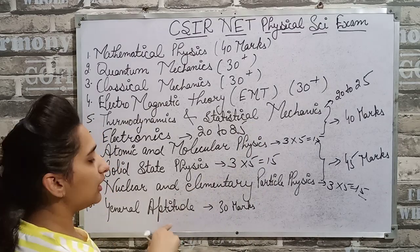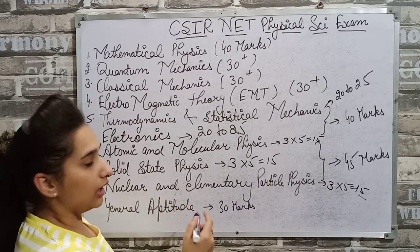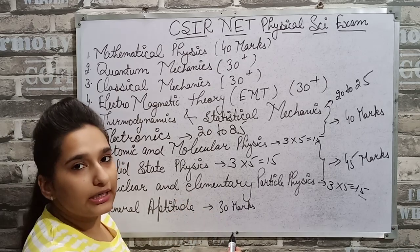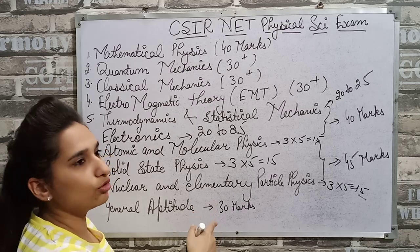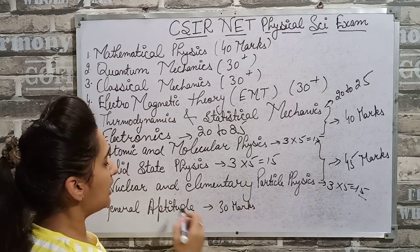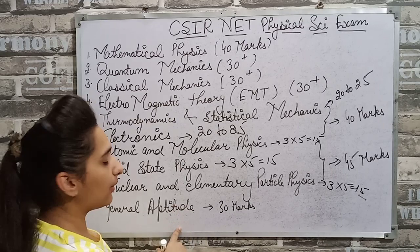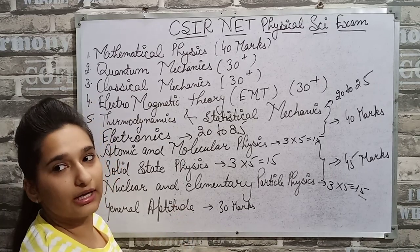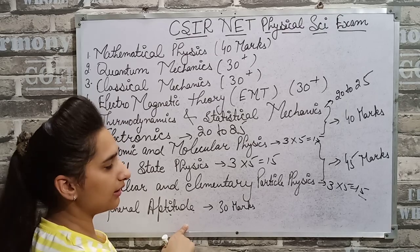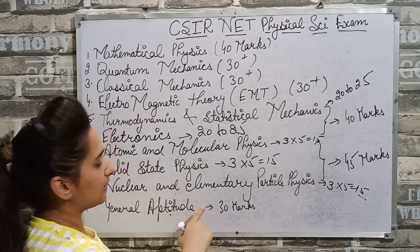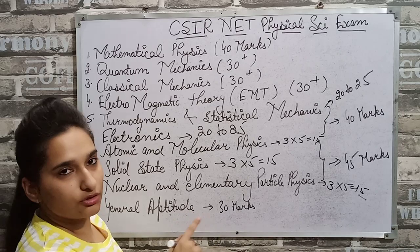In General Aptitude, there are 20 questions. We can attempt 15, and we can easily attempt 10 questions. For General Aptitude, I prefer that you only use previous year questions. Whatever CSI or NET exam has come from previous years, you can easily solve 10 questions.